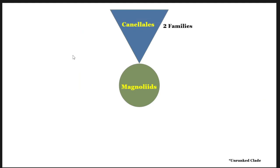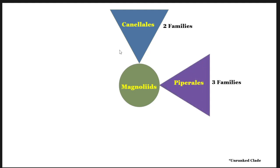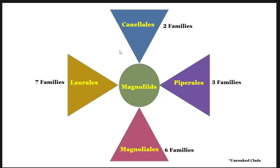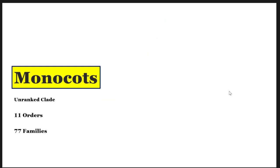Magnolids comprise four orders: Canellales with two families, Piperales with three families, Magnoliales with six families, and Laurales with seven families. Chloranthales is the order positioned between magnolids and monocots.